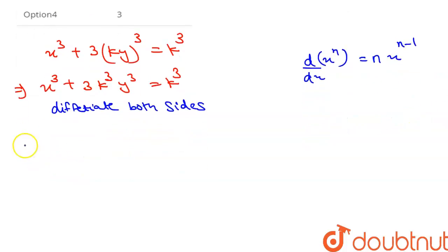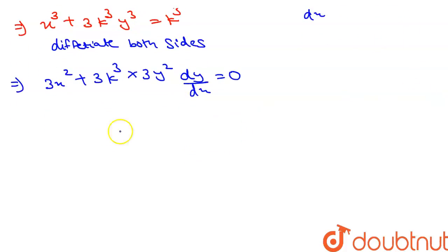So from here we can write this equal to 3 x square plus 3 k cube multiply 3 y square dy by dx equal to 0. So from here we can write as dy by dx,